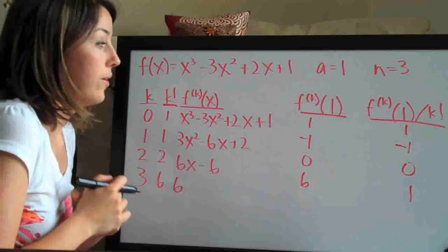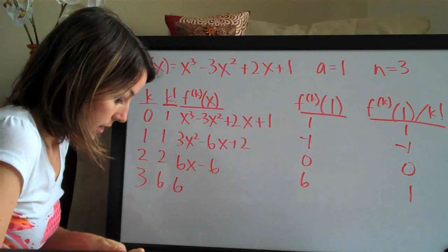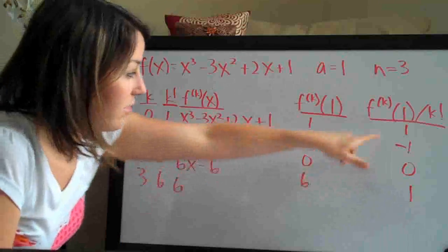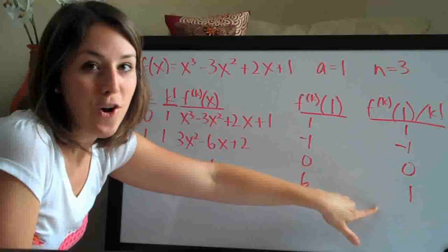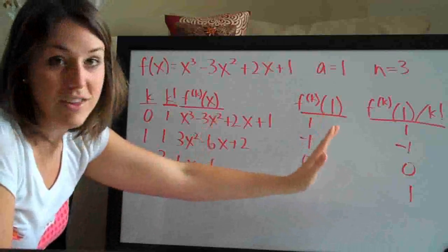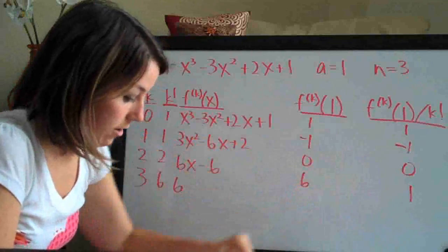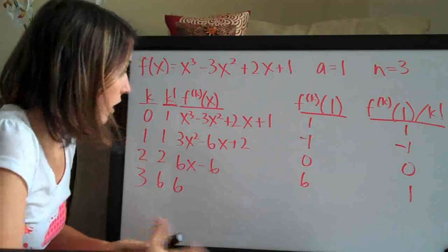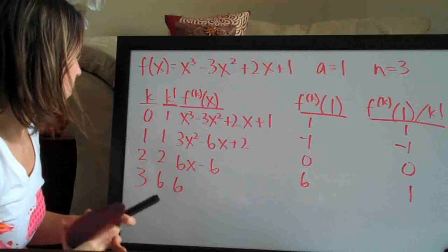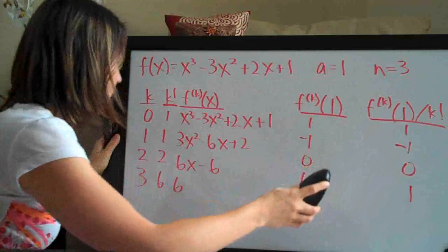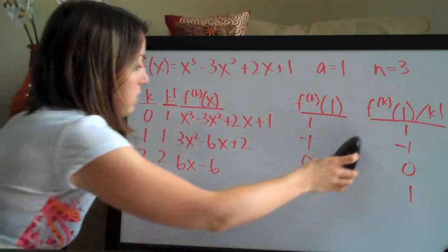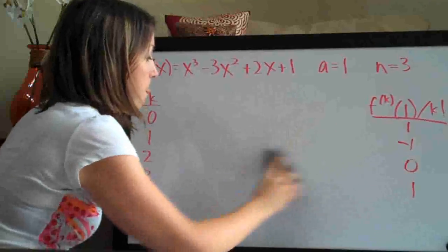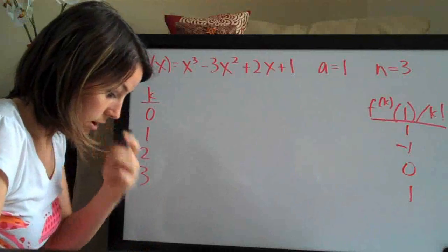Alright, so now we've built our table and really the whole reason we had to do that was because this column here is all that matters to us. So unfortunately, we have to do all of these columns so that we can get here because we need these numbers. They are going to be the coefficients on our Taylor polynomial. So we can go ahead and let's actually erase this center stuff because we're going to need, it will be easiest to reference using both of these columns.